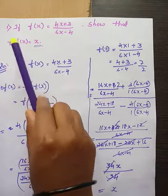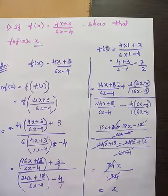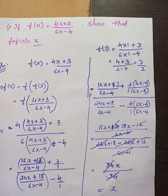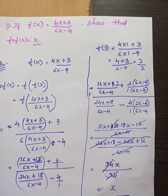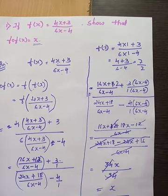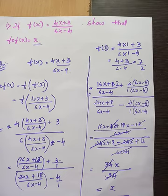So we got the answer — we had to prove that f∘f(x) = x, and indeed we obtained f∘f(x) = x. Whenever you do the composition of a function with itself in this case, you will get the answer as x itself. I hope you are clear with the simplification. If you have any doubts, kindly contact. Thank you.